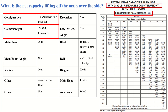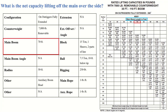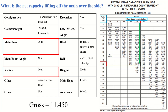Now let's find the gross now that we know we have the right chart. We have 70 feet of main boom and a radius of 50 feet. You can see above radius it says N/A on the main boom angle — so these are the two numbers we're going to use to find gross. Lining these two numbers up on the chart gives us 11,450 pounds — that is our gross.